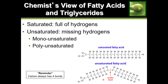Another important point: where the double bond occurs, the structure is bent. Whenever we have unsaturated fats, a double bond will occur, and wherever that double bond occurs it causes the structure to bend.